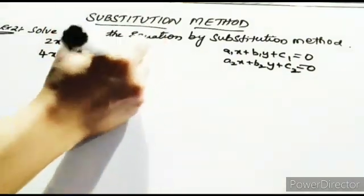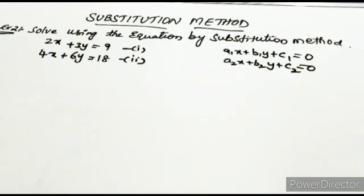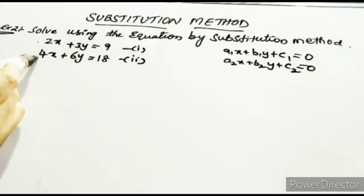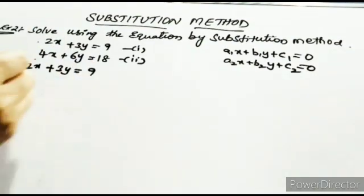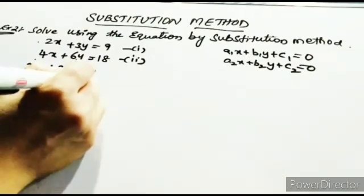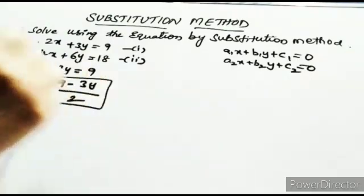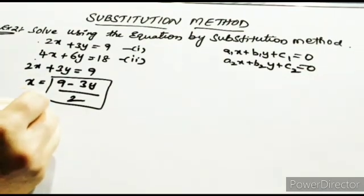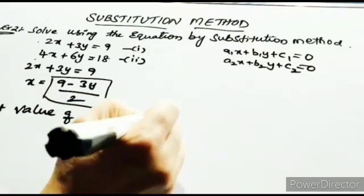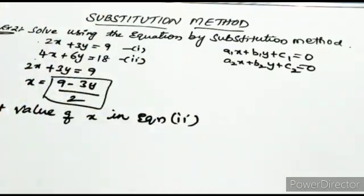We label the first equation as equation 1 and the second as equation 2. For the next step, take any one of the equations — preferably the one with smaller coefficients. The first equation has smaller coefficients, so I am taking equation 1: 2x plus 3y equal to 9. The value of x is equal to 9 minus 3y, divided by 2.